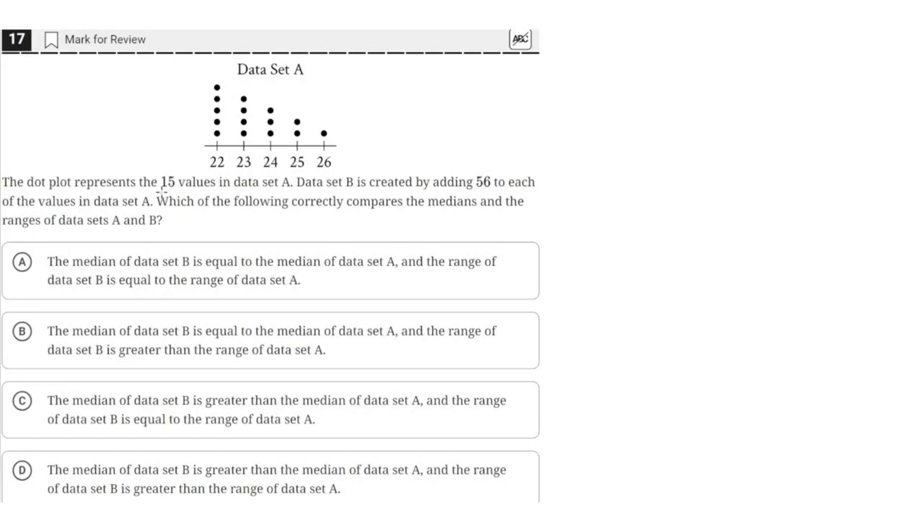The dot plot represents the 15 values in data set A. Data set B is created by adding 56 to each of the values in the data set. Which of the following correctly compares the medians and the ranges of data sets A and B?